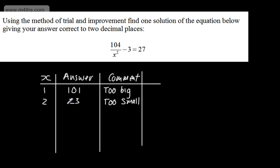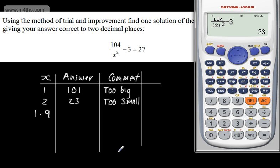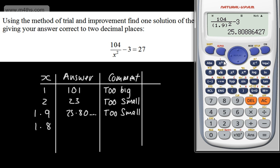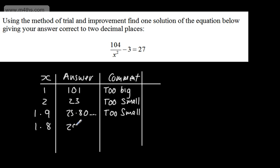At this stage, I'm going to locate it to one decimal place first. The value looks a lot closer to 2 than to 1, so instead of trying the midpoint I'm going to try 1.9. Substituting 1.9 gives 25.808 — this is still too small. My next trial is 1.8, to locate it correct to one decimal place. Substituting 1.8 gives 29.09 — that is too big. So the answer is somewhere between 1.8 and 1.9.